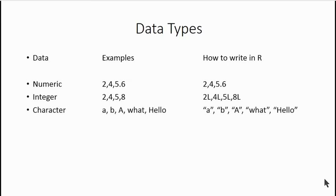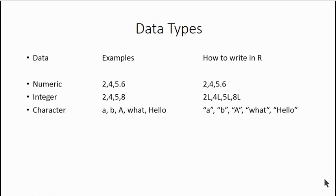The third type of data is called character data. Character data examples include English alphabets — small alphabets, capital alphabets, words, sentences, essays, etc. All of them are called character type of data. For example, A, B, capital A, 'what', 'hello', 'what's your name', 'how are you', etc. All of them are considered as character type of data.